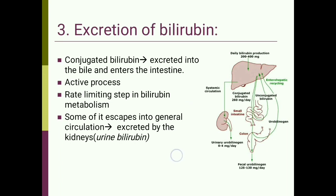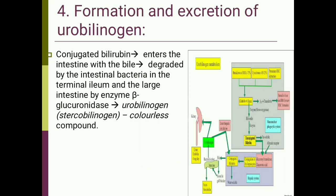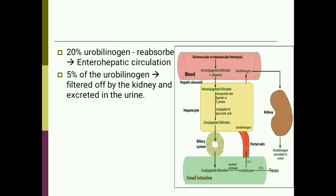The fourth step is the formation and excretion of urobilinogen. Conjugated bilirubin enters the intestine with the bile and is degraded by intestinal bacteria present in the terminal ileum and large intestine. These bacteria have the enzyme beta-glucuronidase, which splits off the glucuronide and converts bilirubin into urobilinogen — also known as stercobilinogen — which is a colorless compound.